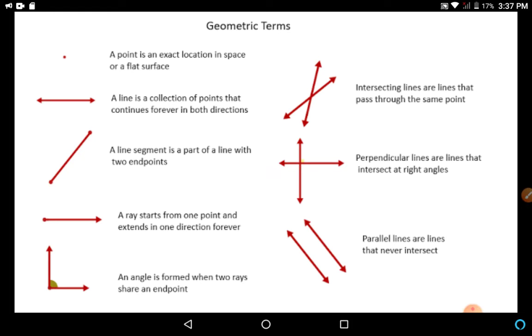A ray starts from one point and extends in one direction forever. An angle is formed when two rays share an end point. Intersecting lines are lines that pass through the same point. Perpendicular lines are lines that intersect at right angles. Parallel lines are lines that never intersect.